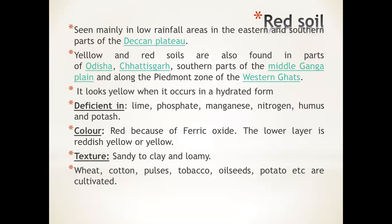Red and yellow soil is seen mainly in low rainfall areas in the eastern and southern parts of the Deccan Plateau. It is also found in some parts of Odisha, Chandigarh, the southern parts of middle Ganga plain, and the western Ghats. When it occurs in dehydrated form due to low rainfall, the red soil looks yellow. That is why this soil is called red and yellow soil — the color changes due to dehydration.